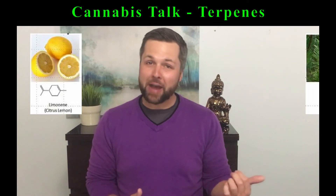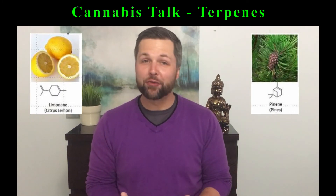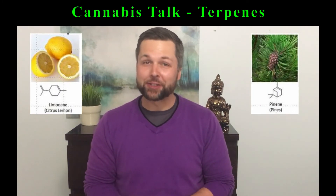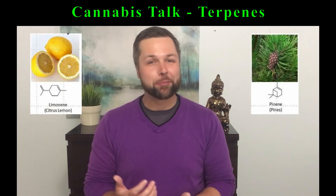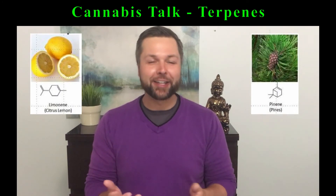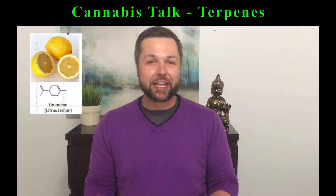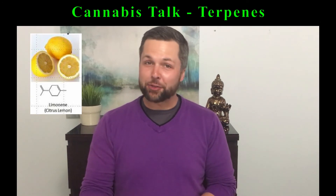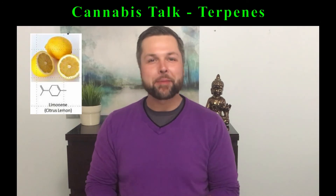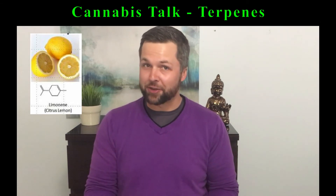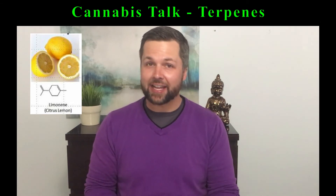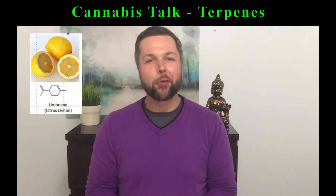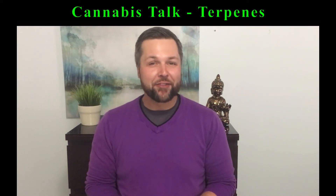Taking a look now at limonene and pinene, two of the most pungent terpenes — these both smell a lot like how they sound. Limonene can be found most commonly in citrus rinds and smells a lot like lemons. Great for helping with things like depression and anxiety, it's no wonder a hot lemon tea always makes you feel happy.